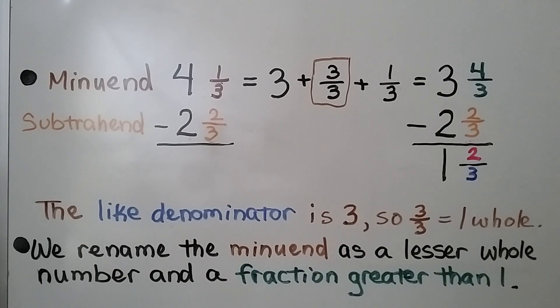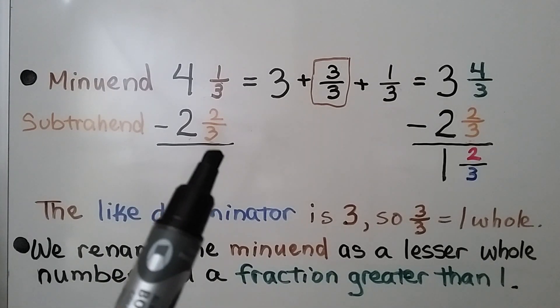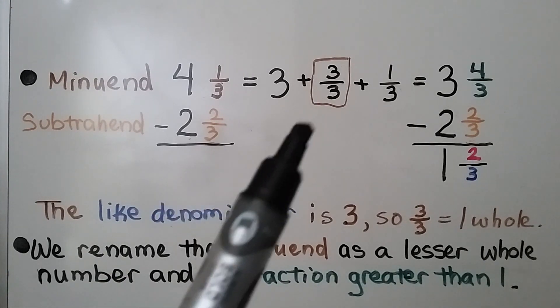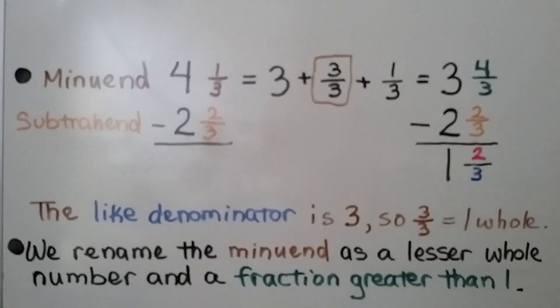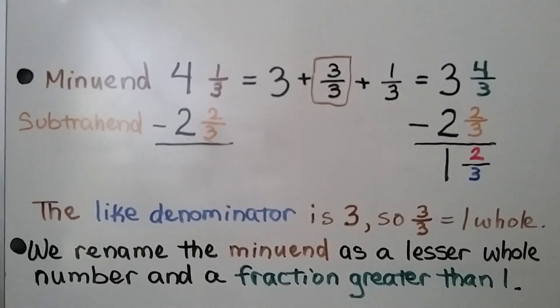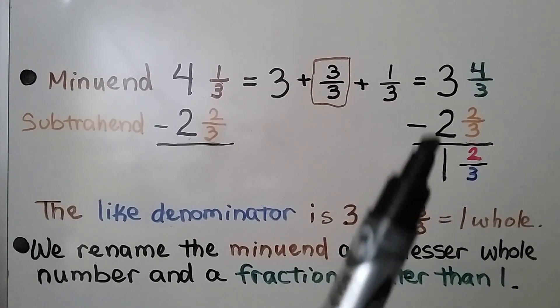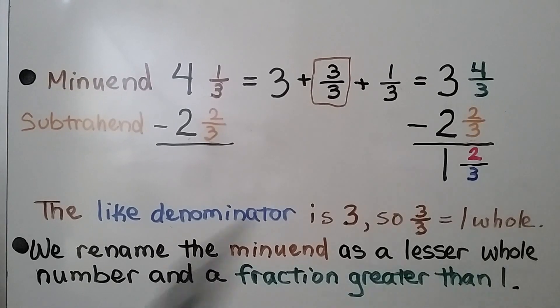Remember, the like denominator in this problem is 3, so 3-thirds is equal to one whole. We rename the minuend as a lesser whole number and a fraction greater than 1.